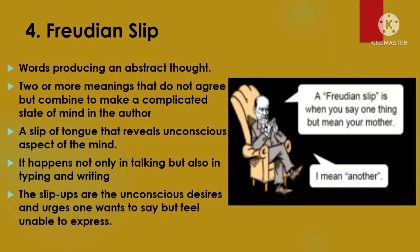The fourth type of ambiguity is when two or more meanings do not agree but combine to make a complicated state of mind in the author. It is also called a Freudian slip — words producing an abstract or outline thought. The term comes from Sigmund Freud, the founder of psychoanalysis. A Freudian slip is a slip of the tongue motivated by and revealing some unconscious aspect of the mind — when you mean to say one thing but say something entirely different. For example, a child who accidentally calls their teacher 'Mom' is transitioning from spending most of the day with their mother to spending it with their teacher, or calling a spouse by an ex's name. These slip-ups reveal unconscious desires or things you actually want to say but feel unable to express.